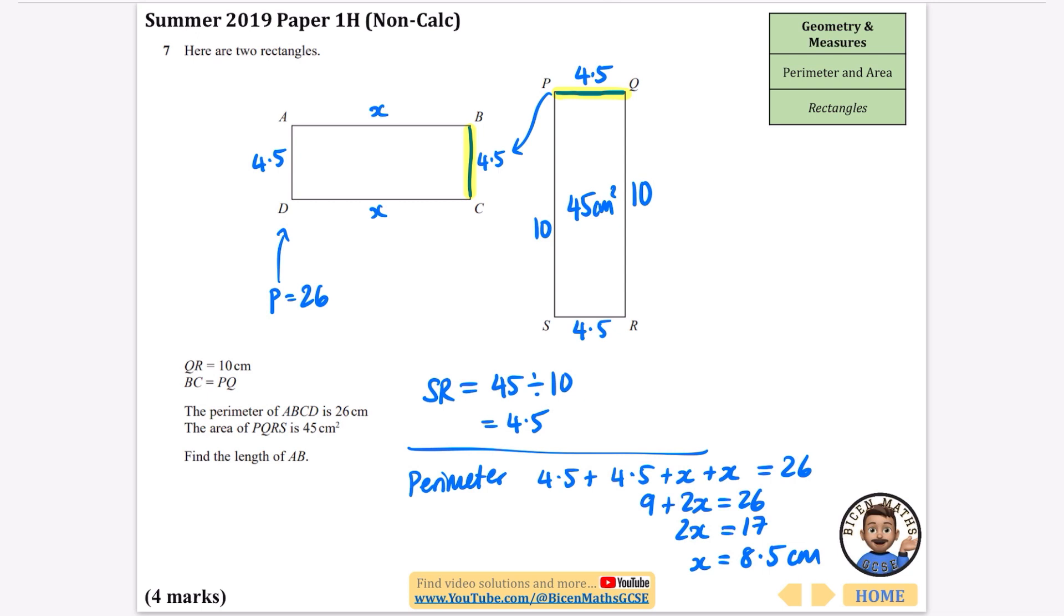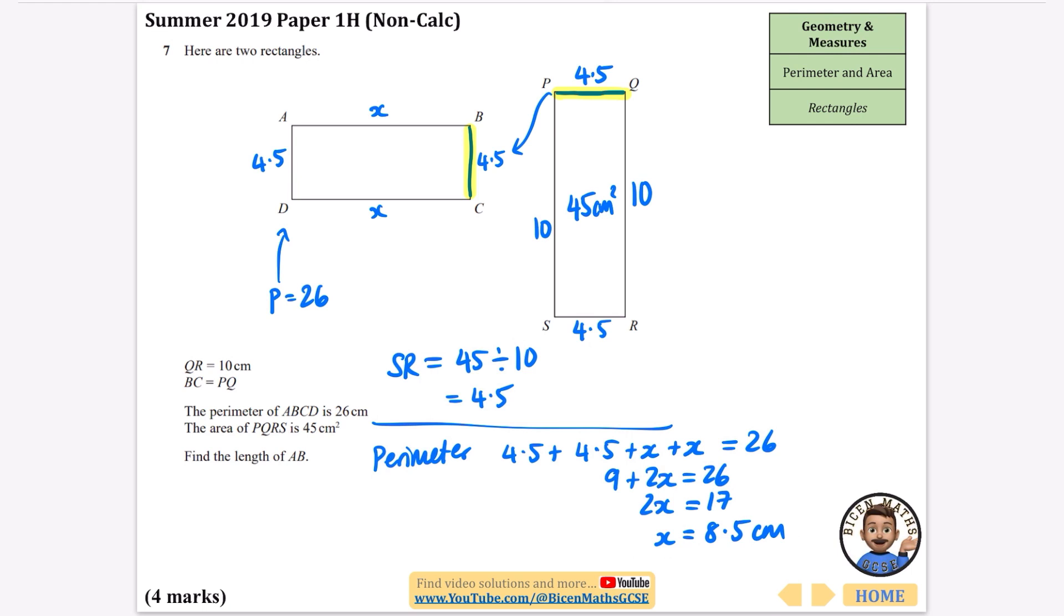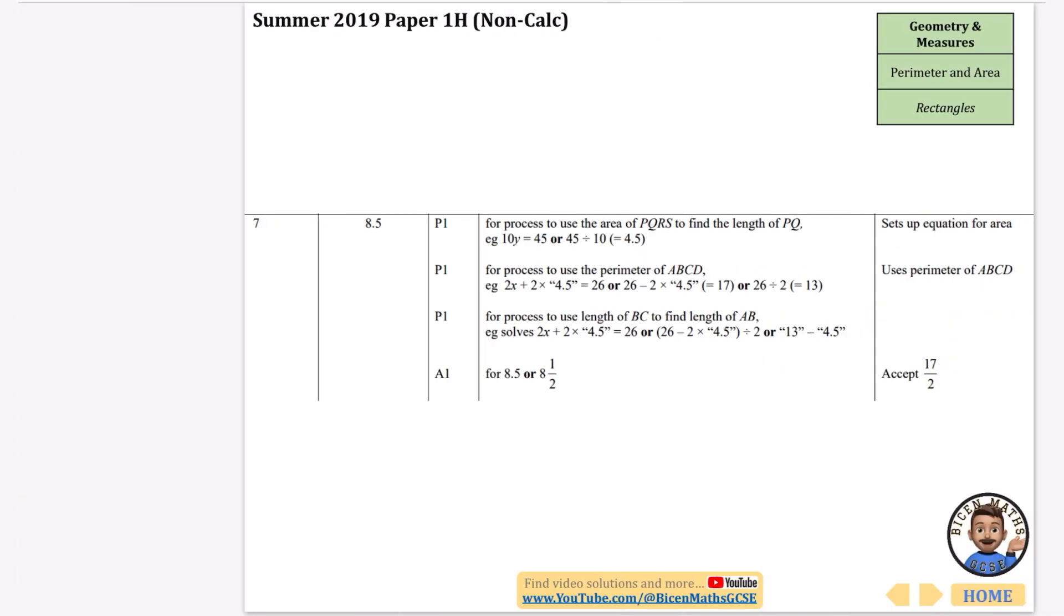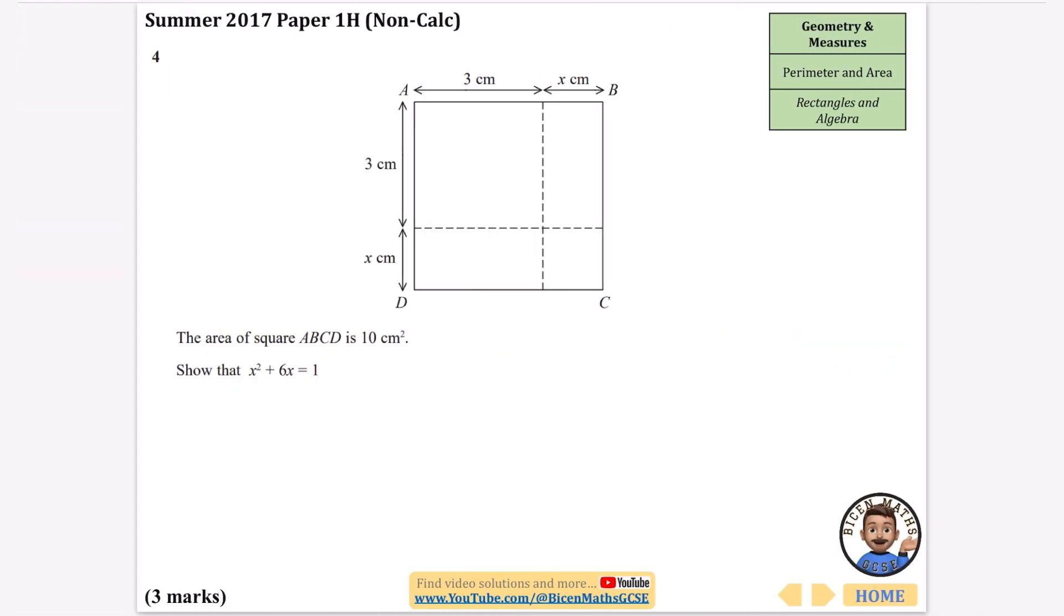Half of 17 is 8.5, so the length of AB is 8.5 centimeters. Let me double check it's right. Yep, there's the 8.5. Sometimes these mark schemes can be difficult, which is why I've wanted to do the videos like this so you can see my solutions and thinking.